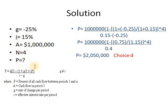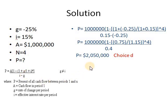This general equation applies for geometric gradients. You must check whether the gradient is increasing or decreasing. If increasing, G is positive. If decreasing, you must apply a negative sign before G in the equation.